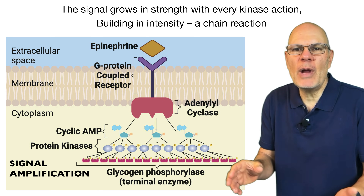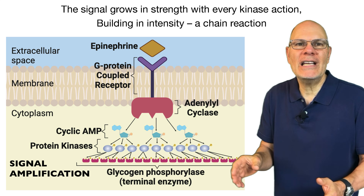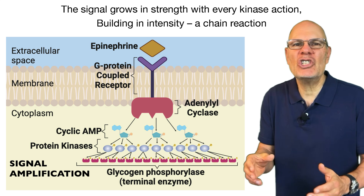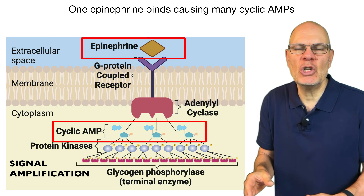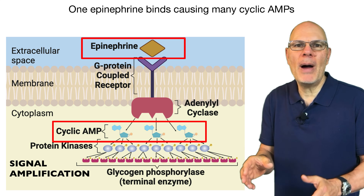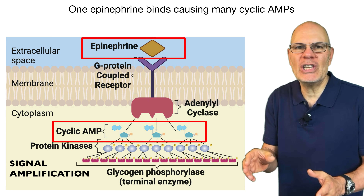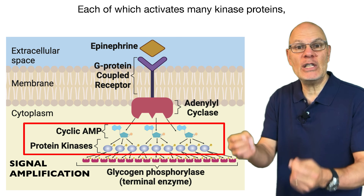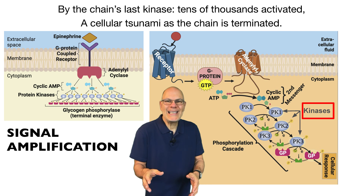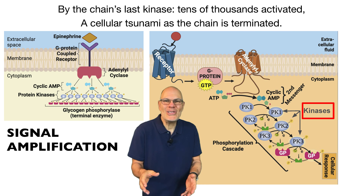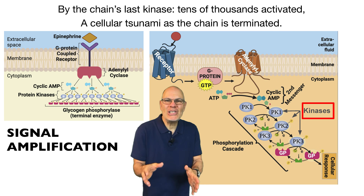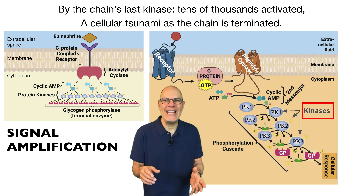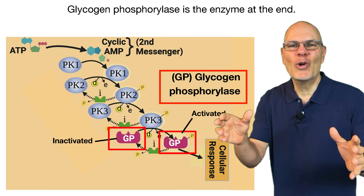The signal grows in strength with every kinase action, building in intensity — a chain reaction. One epinephrine molecule binds, causing many cyclic AMP molecules, each of which activates many kinase proteins. By the chain's last kinase, tens of thousands are activated — a cellular tsunami as the chain is terminated.